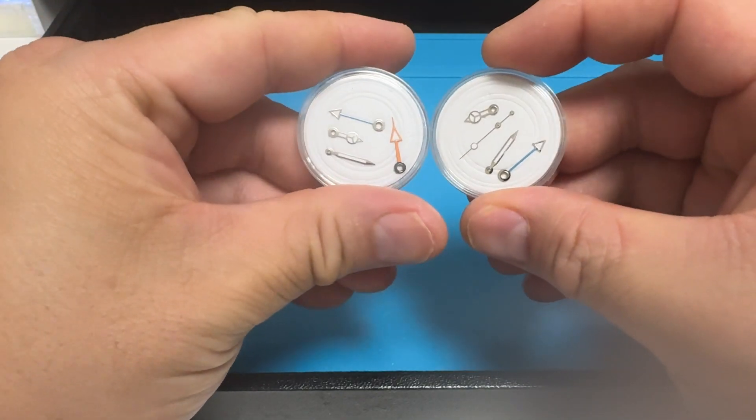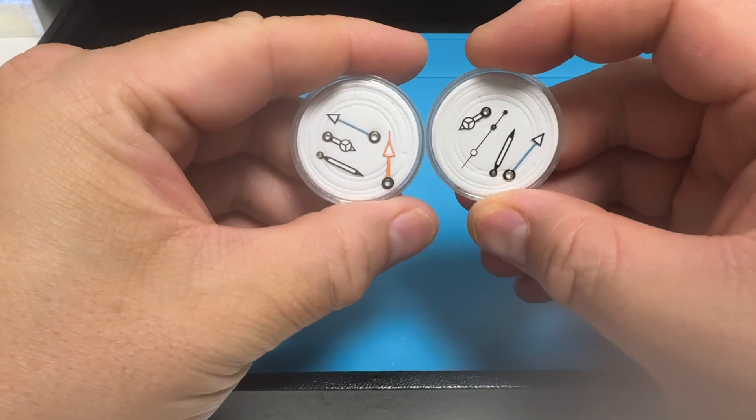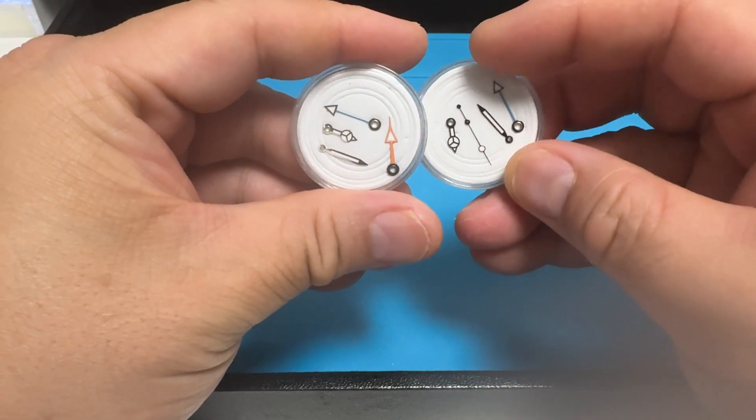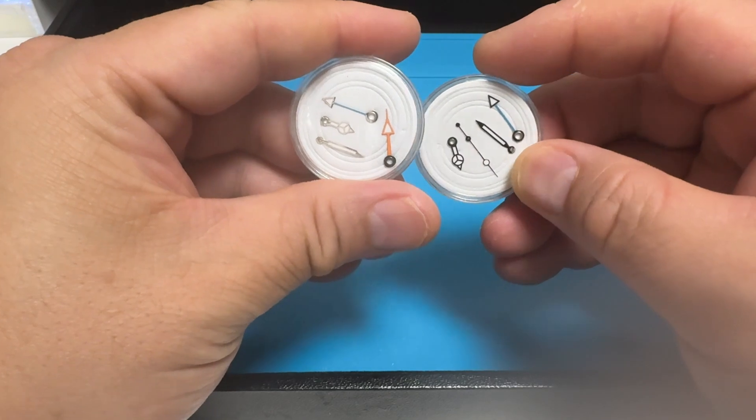There are a couple of styles for the GMT hand: the orange arrow that you'd find on the SSK, and the blue arrow which you'd find on a Submariner.